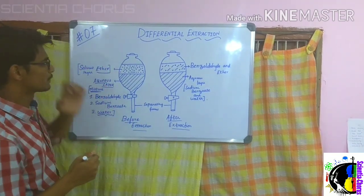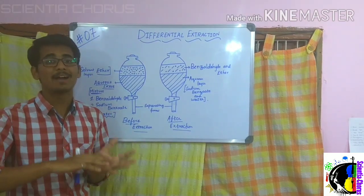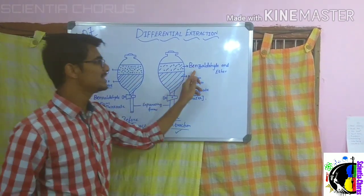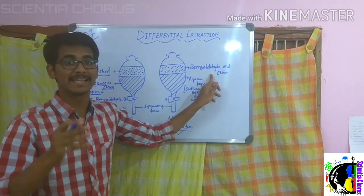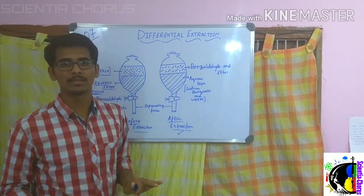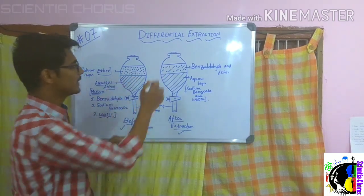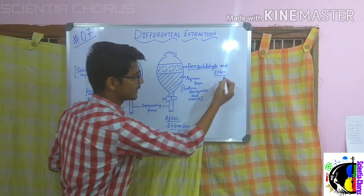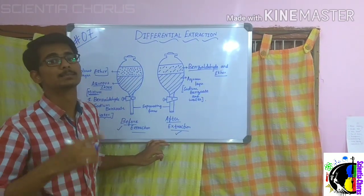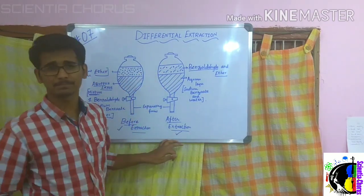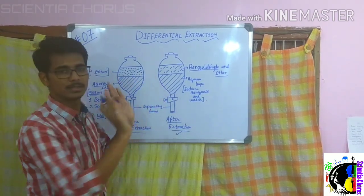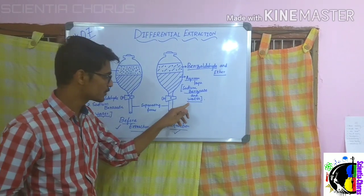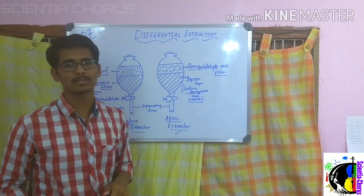After some time — this is before extraction — after some time, the benzaldehyde, which is more soluble in ether, moves and dissolves into the ether solvent. So the ether layer will contain benzaldehyde and ether. Sodium benzoate, on the other hand, is more soluble in water than in ether, so it remains dissolved in the water — that is the aqueous layer.